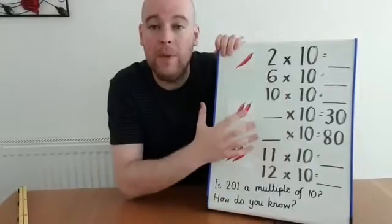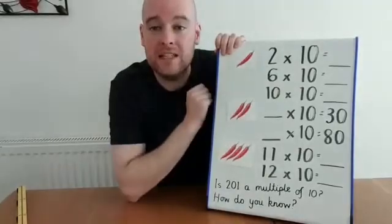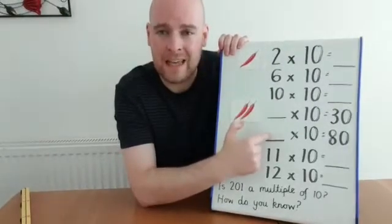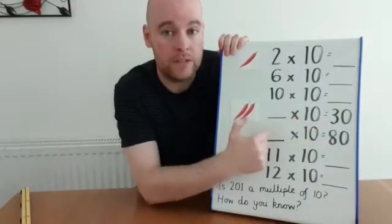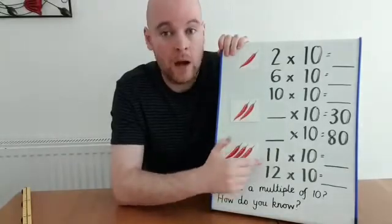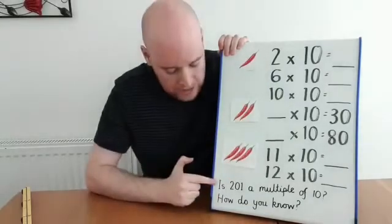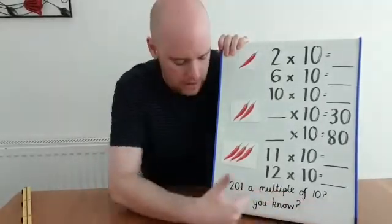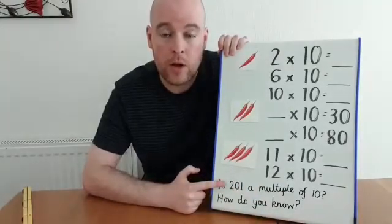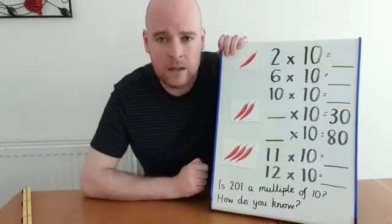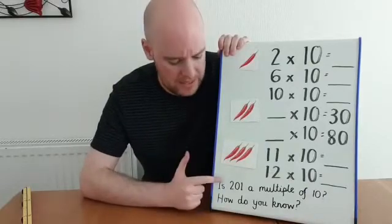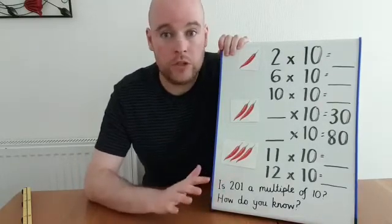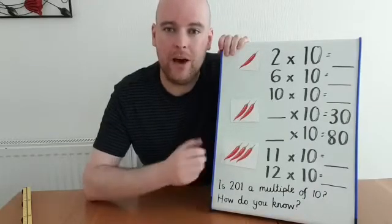Here are today's chilli challenges, all linked to the 10 times table. We've got some number sentences at the top, like the ones we've just been doing on the counting stick. If you'd like to challenge yourself, hopefully you can do chilli 2 — work out which numbers are missing in my number sentences. I've given you the answers, so work out what the first numbers should be. Maybe you could work out what 11 and 12 times 10 are, because I don't have those on my counting stick. And finally, a real challenge: is 201 a multiple of 10, and how do you know? Look closely at the number and think about place value — hundreds, tens and ones — and see if you can explain whether that is a multiple of 10. Pause the video now to have a go, then play it again when you've finished and we'll look at some answers together.